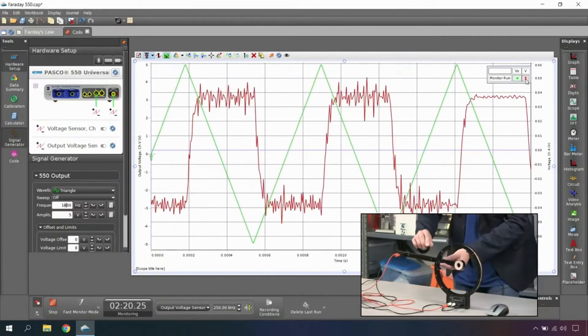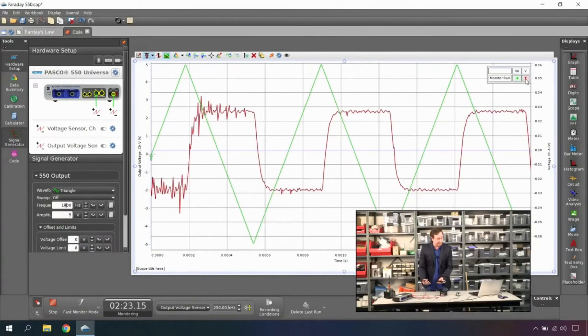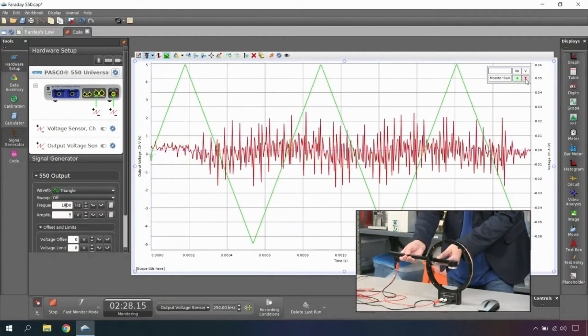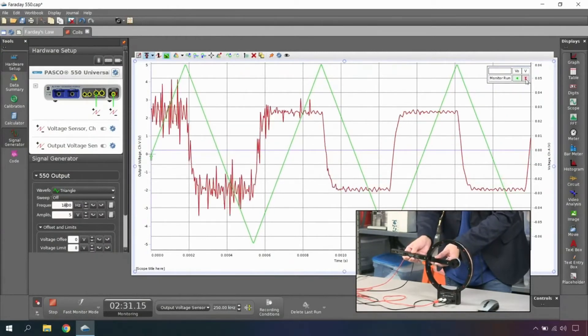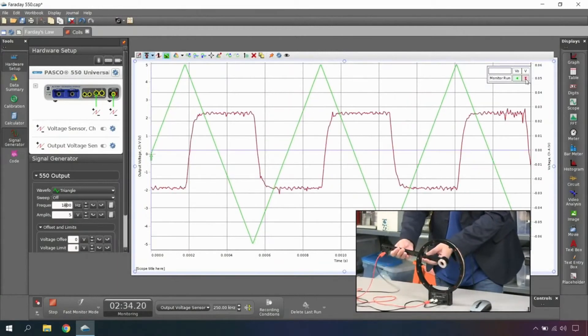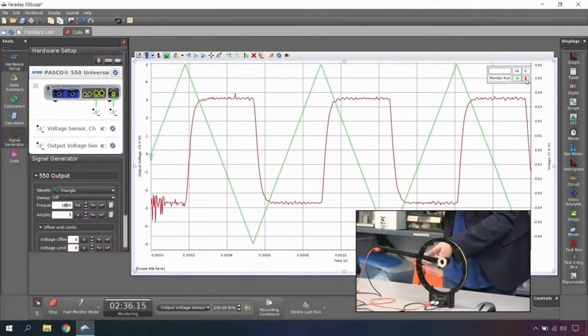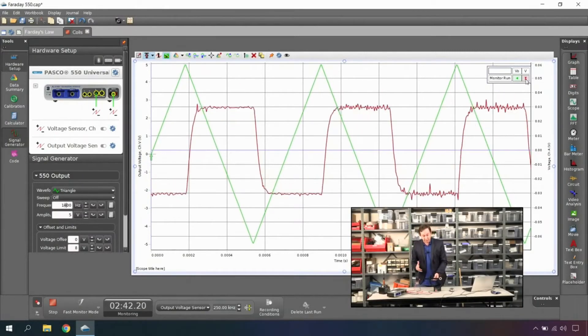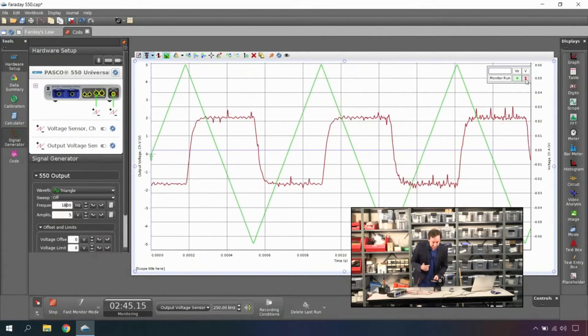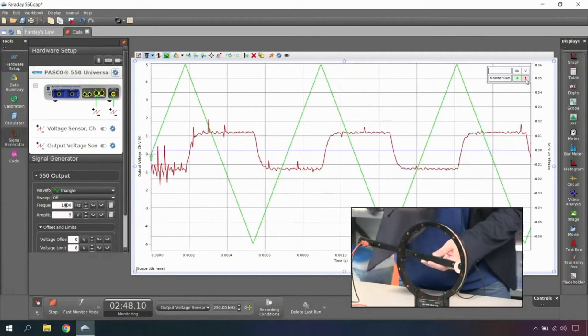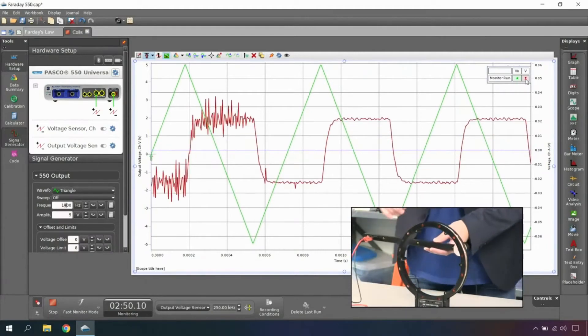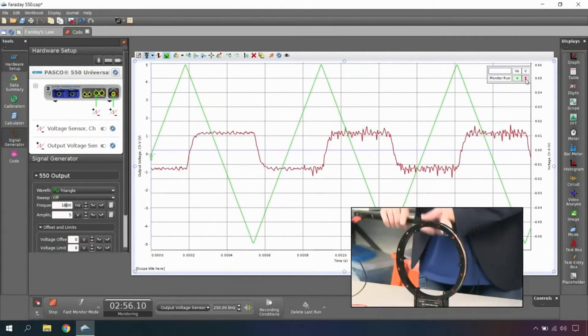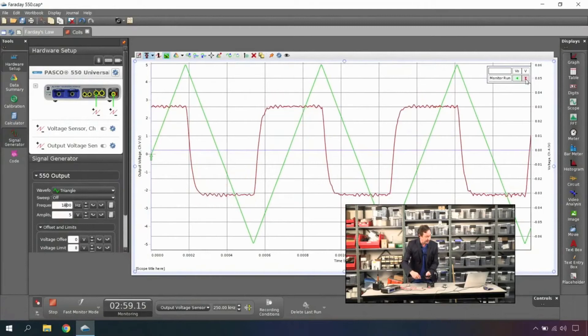Now what would happen if I took my detector coil and flipped it around? Well, as I go perpendicular it goes down to zero, and as I flip it around you see it reverses, right? Because the induced EMF is due to the changing magnetic field. This is where you'd want to talk about the right-hand rule and say, well, the current's going in this direction. If I right-hand rule that, I'll know which way the magnetic field is going, and then I can conceptualize how the magnetic flux is changing through the detector coil.